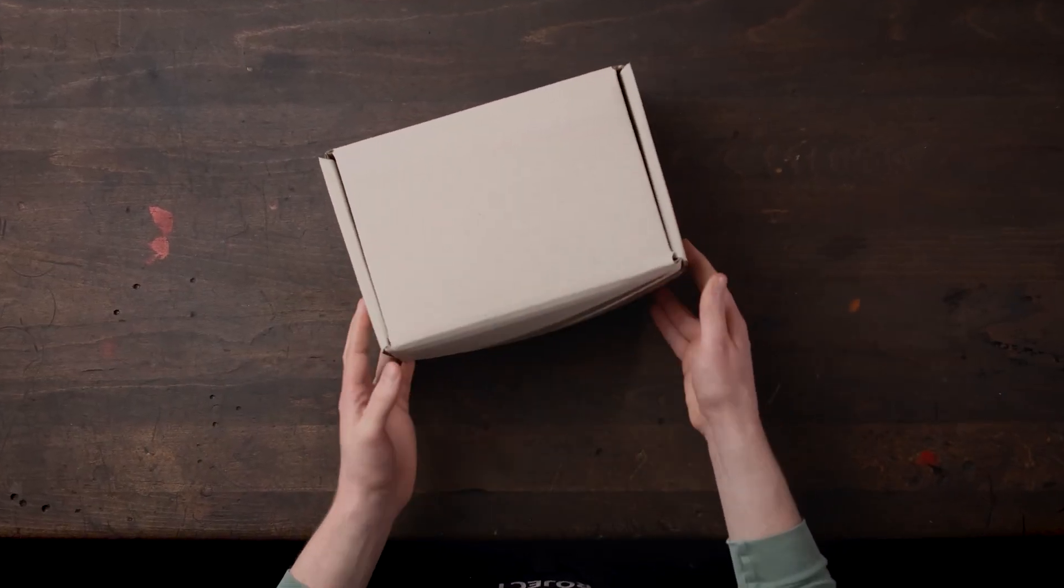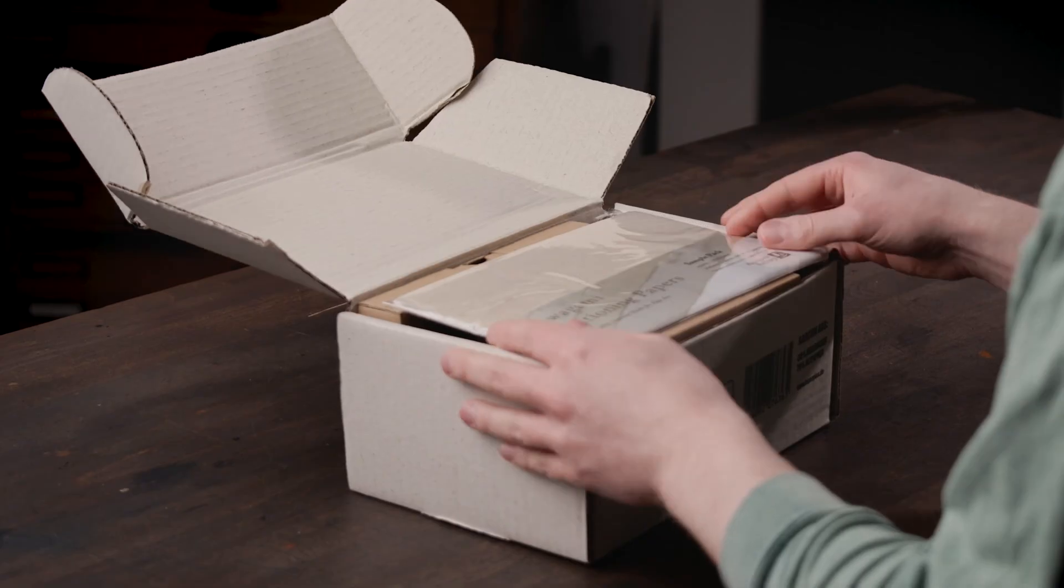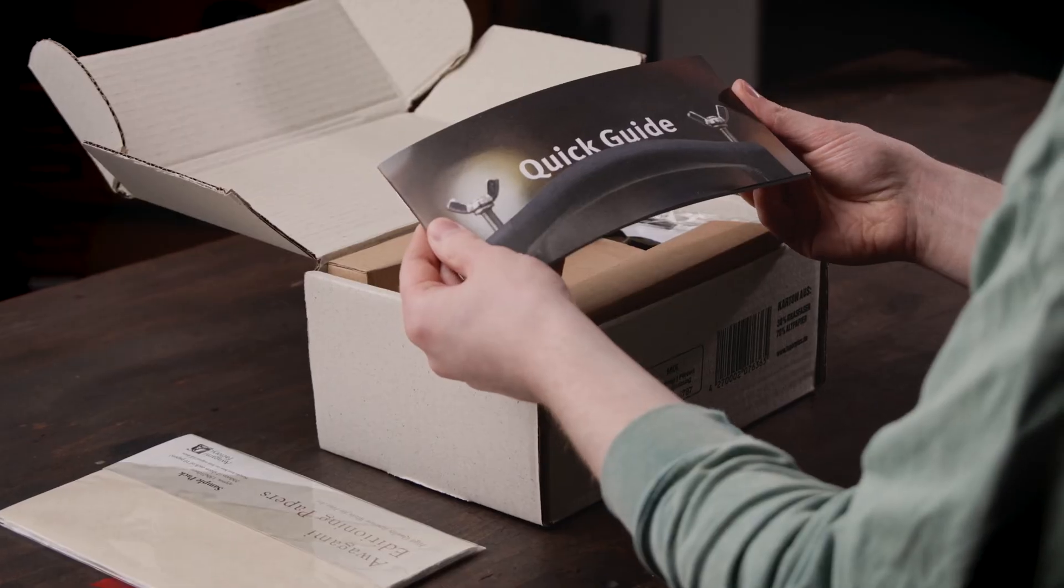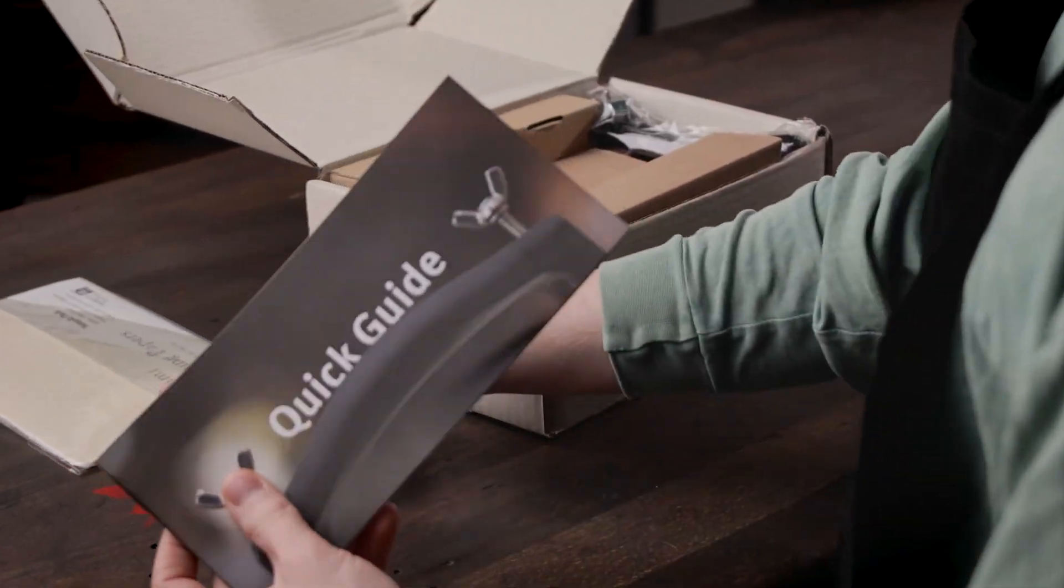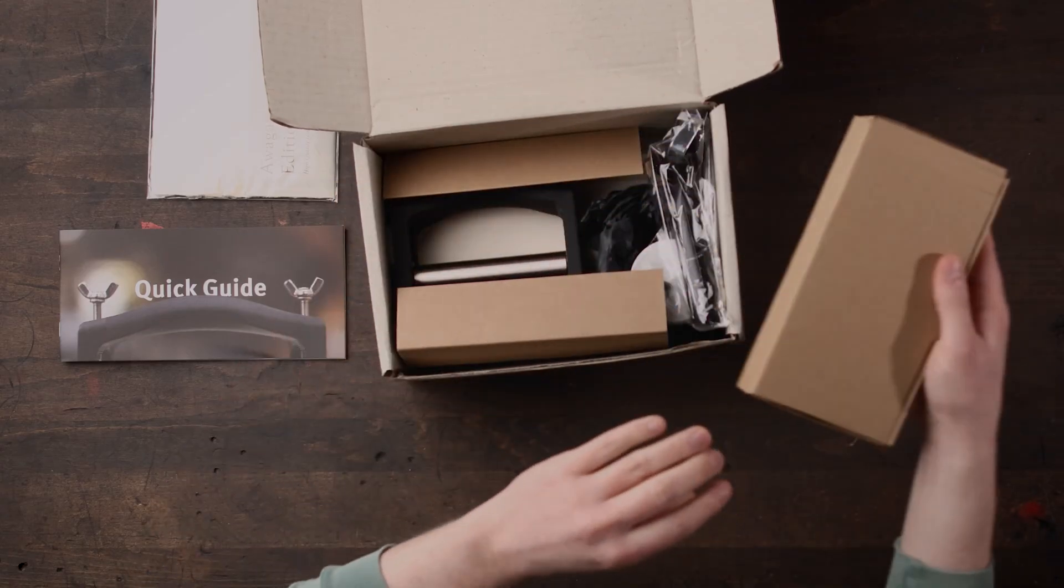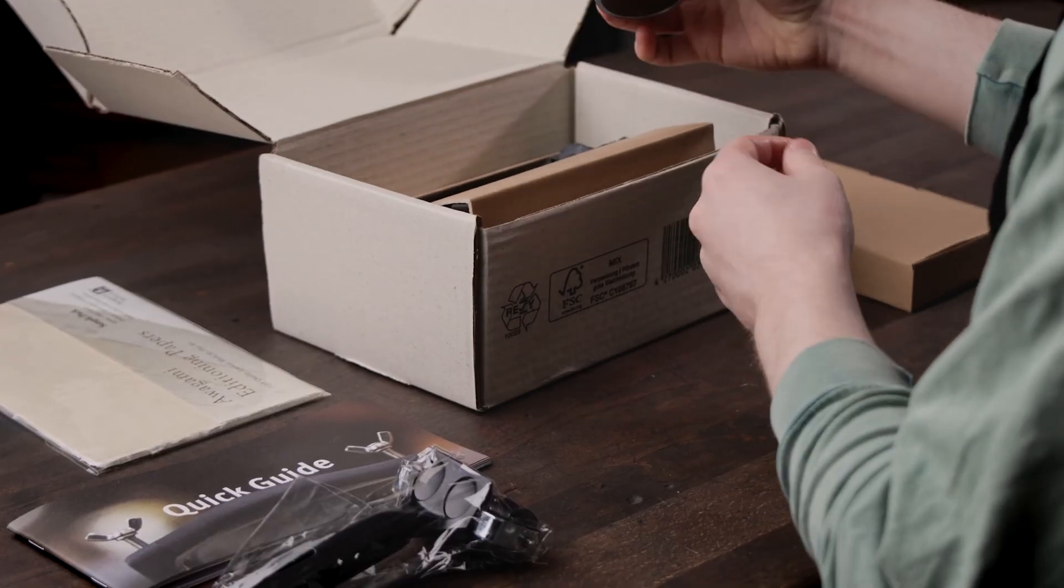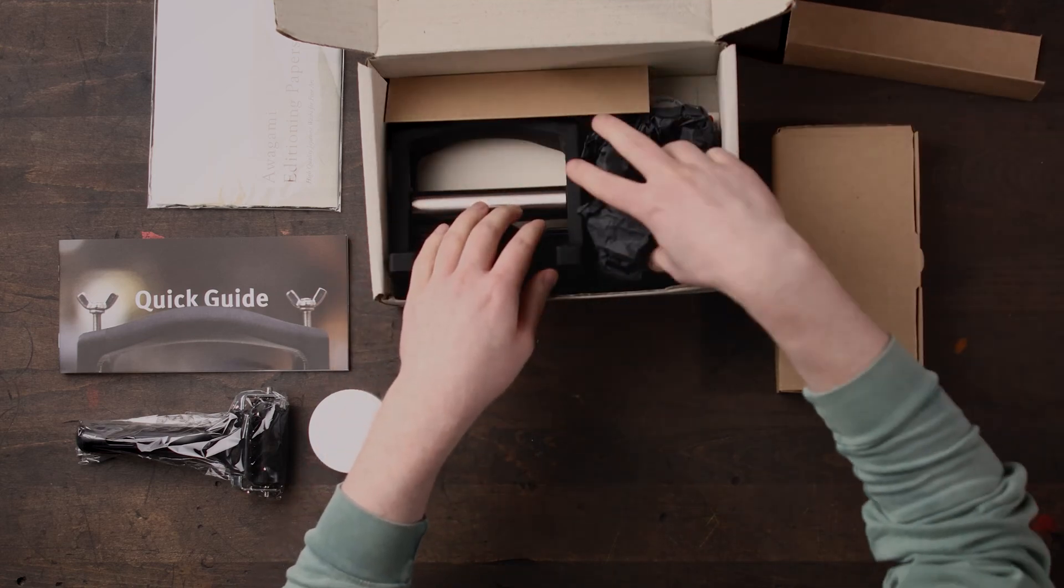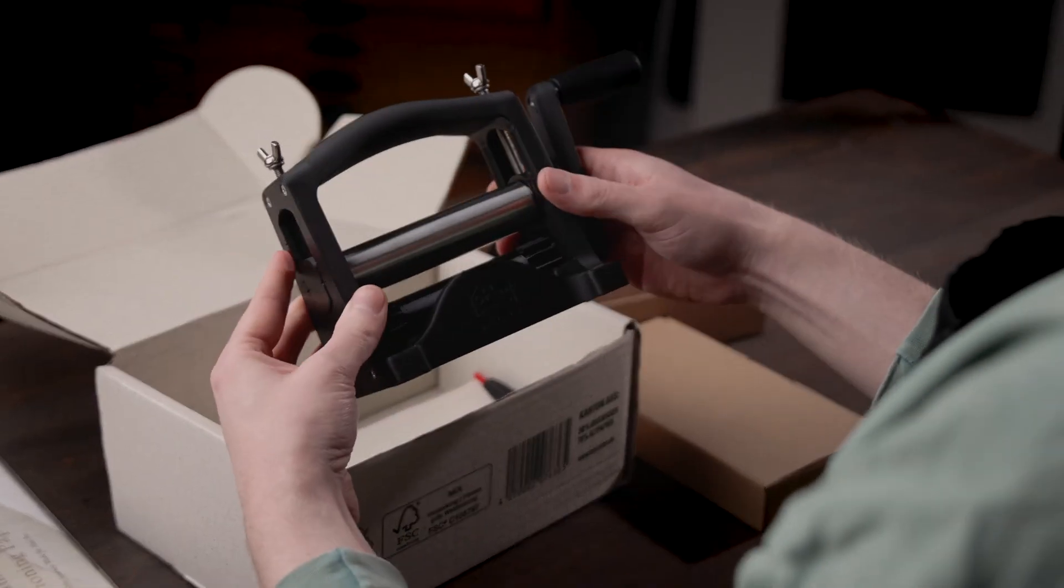If you ordered the press with supplies, you're going to get a box similar to this. It includes a pack of Avogami editioning papers, some really nice Japanese paper, a quick guide with some helpful tips on how to get started. You will have a little box we're going to open in a bit. You will also have a roller to roll out some ink, and obviously the ink. This is some Aqua Intaglio ink. And then obviously the main thing, which is the press. It comes fully assembled and ready to go.